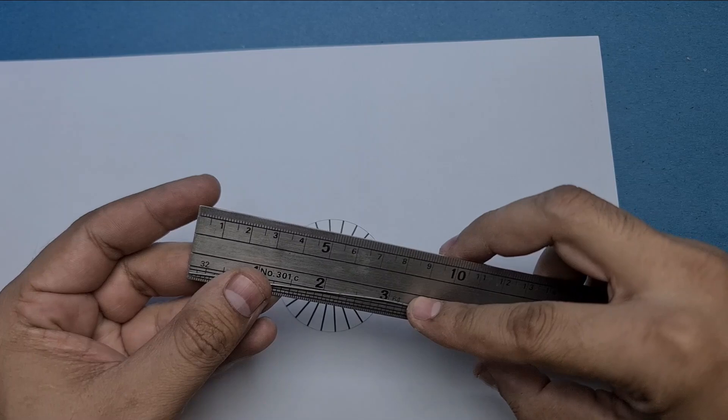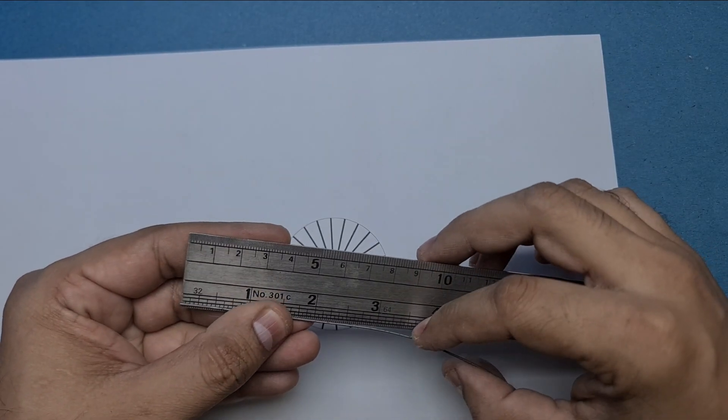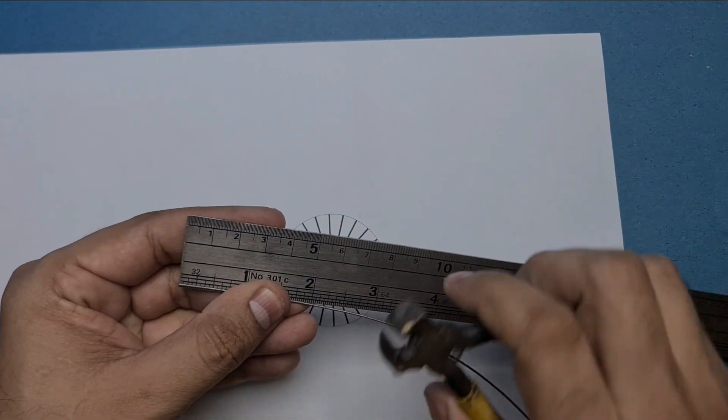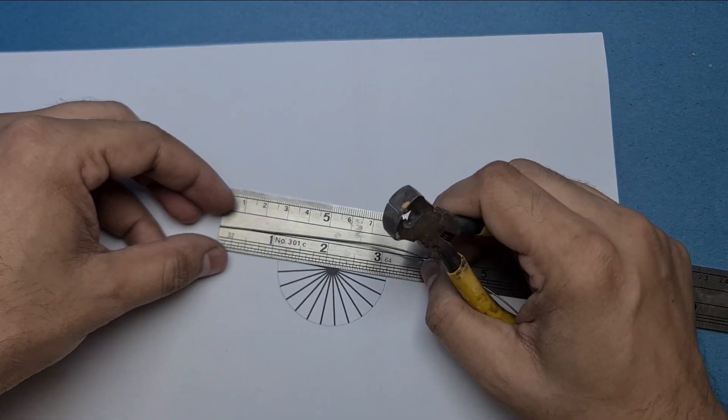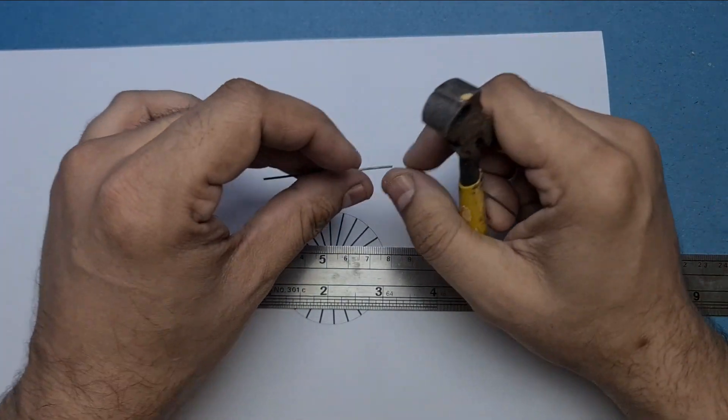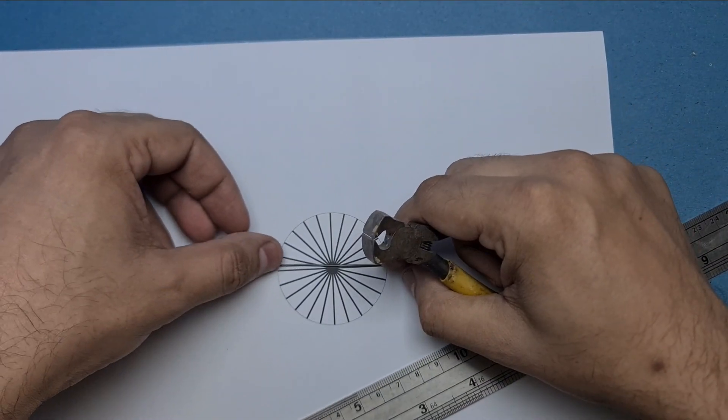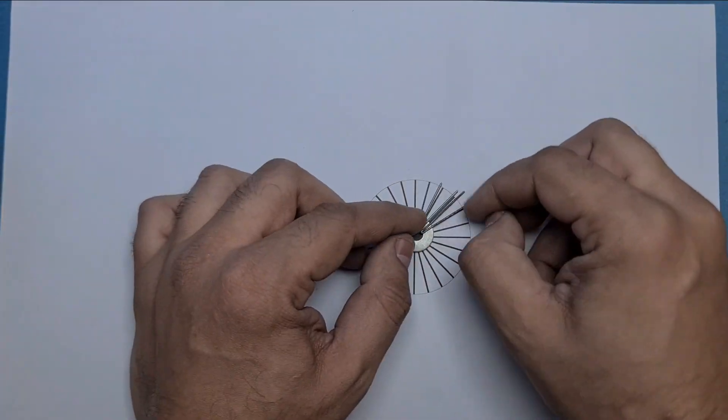Two washers will be used to hold the wires between them. Bend all the wires in a V-shape and arrange the wires like this.